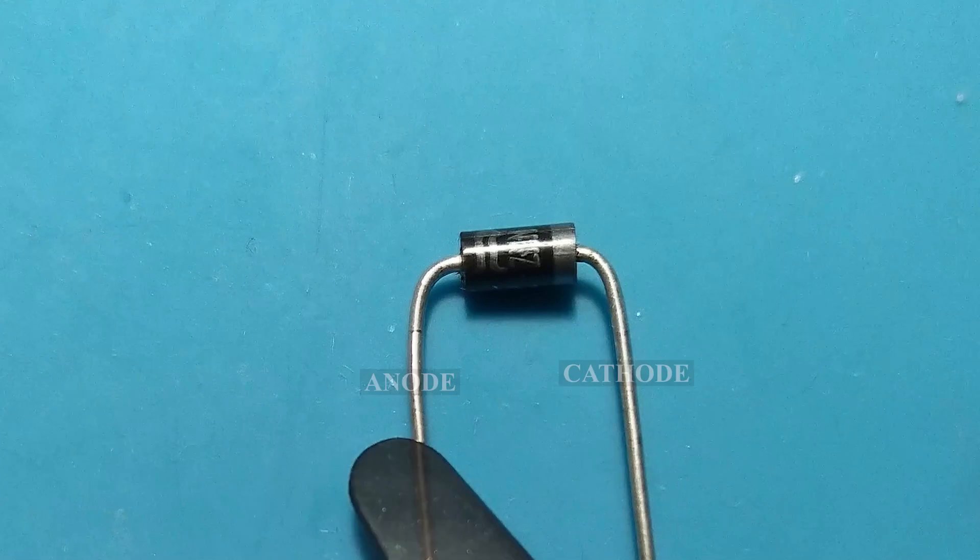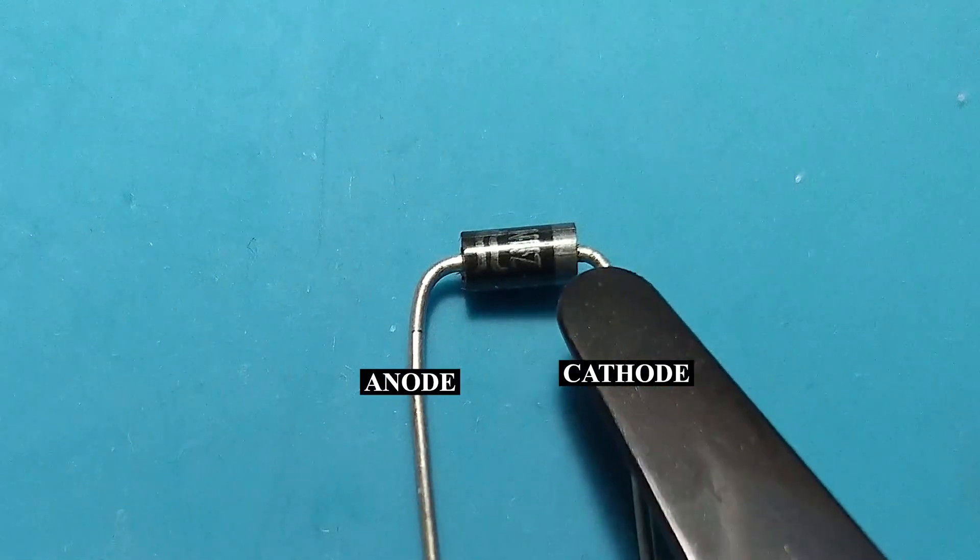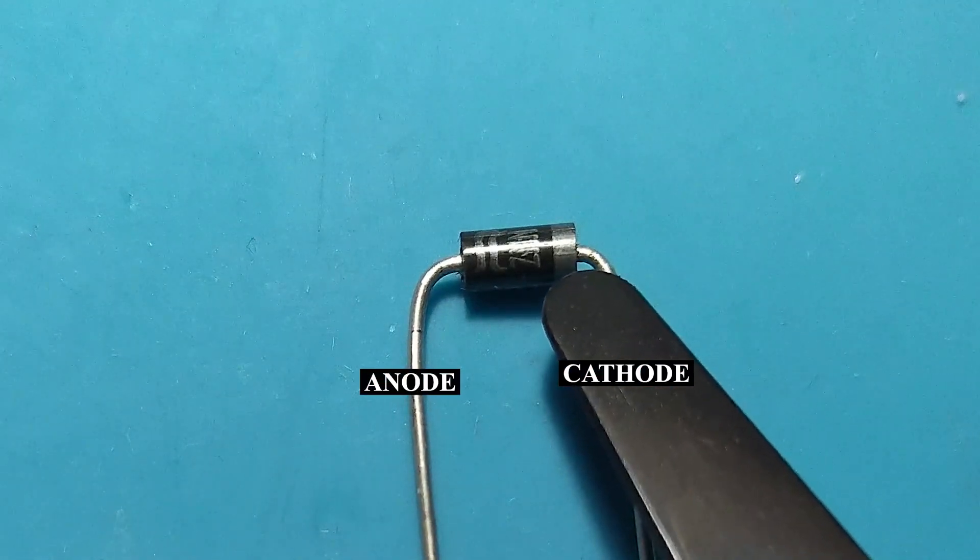This device has two terminals, called anode and cathode. The cathode being marked through a white line.